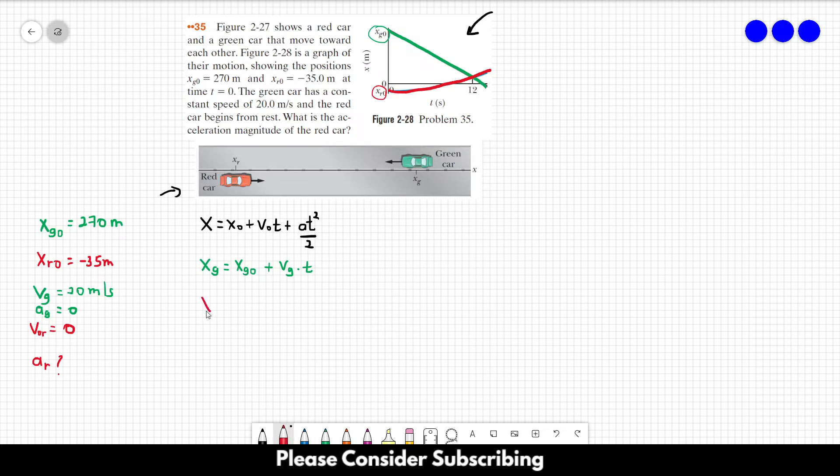For the red card, we know that the position of the red card is equal to the initial position of the red card. This term is 0 for the red card since its initial speed is 0. So we only have the final term, which is the acceleration of the red card times T squared over 2.